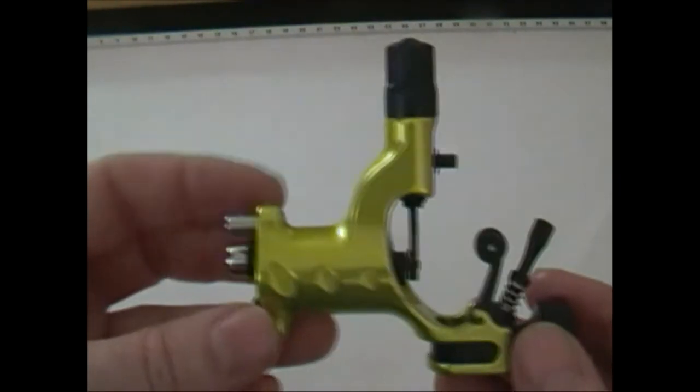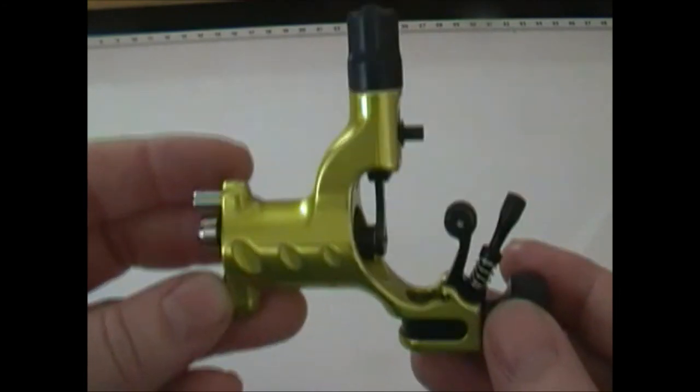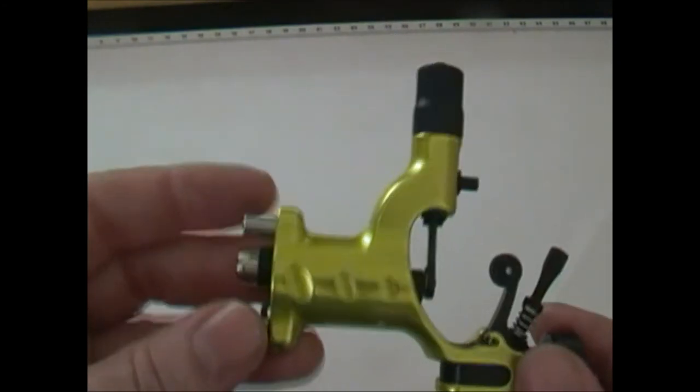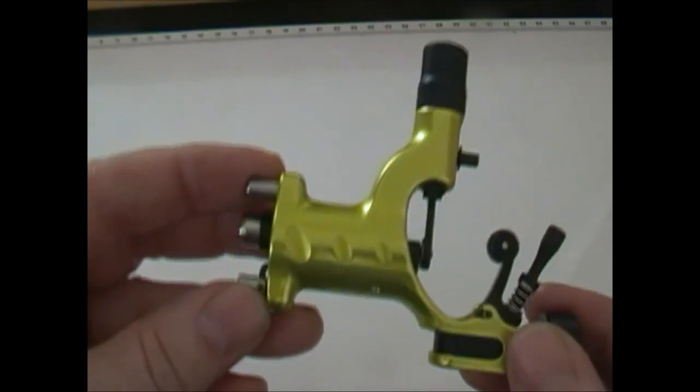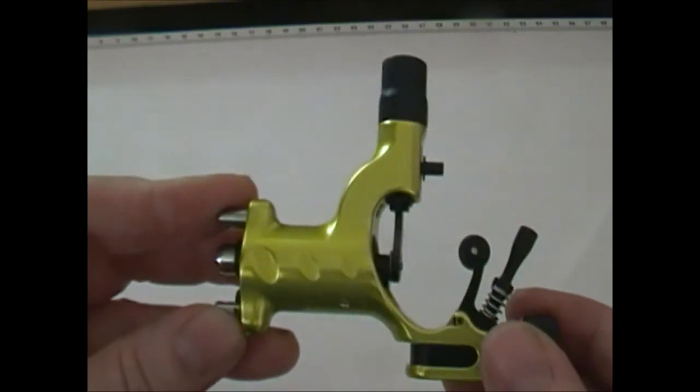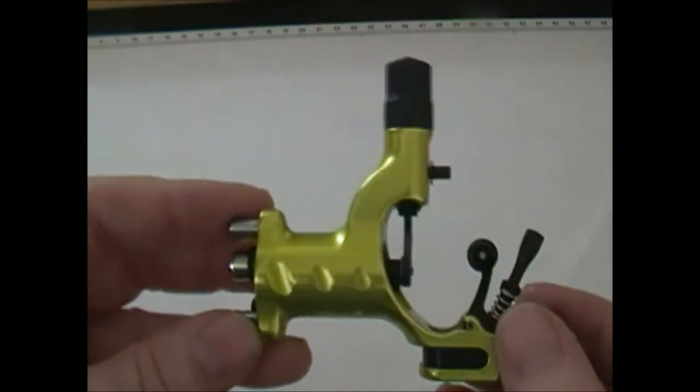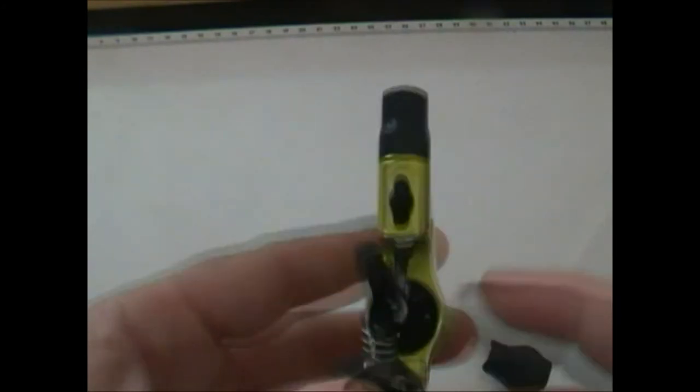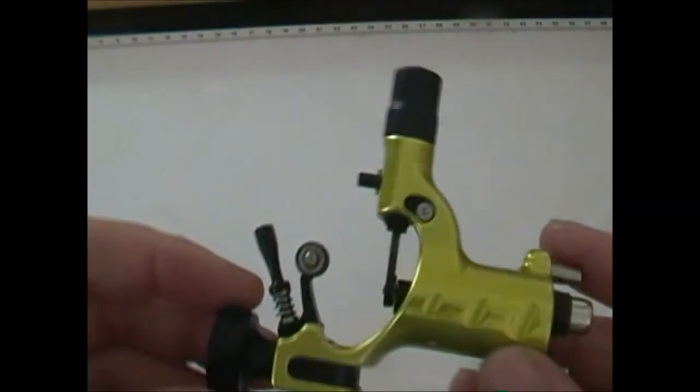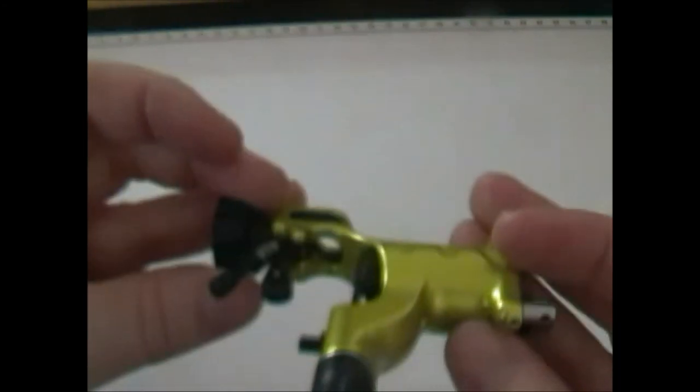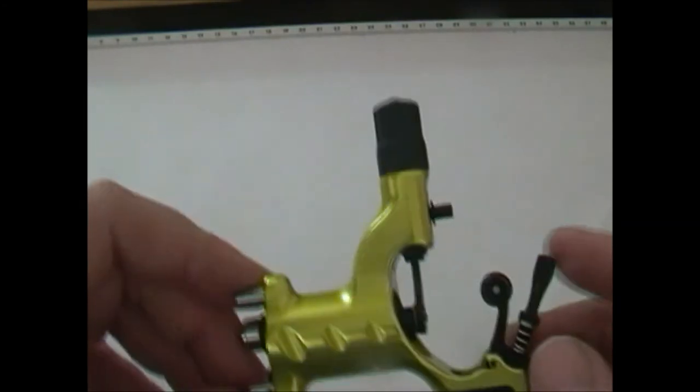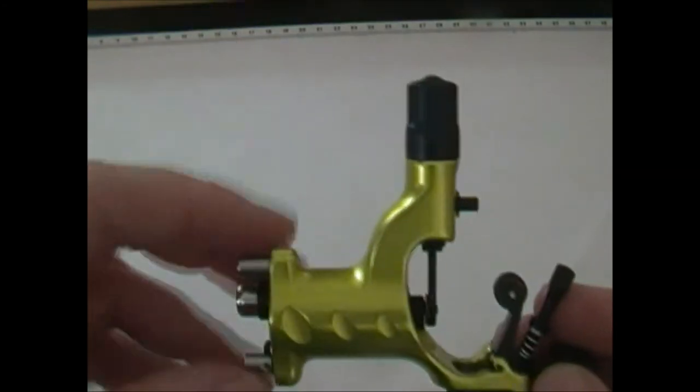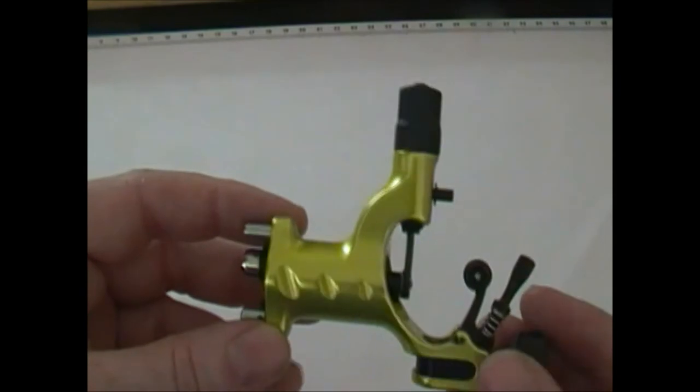I think Ink Machines recommends, shading I think they say on the website between 8 and 10 volts, and for lining anywhere between 9 and 11 volts. But you know, it's all the way around and everything in between, it's how you tattoo, it's got a lot to do with your hand speed, what particular piece you're doing and all the rest of it. So it's only ballpark figures.